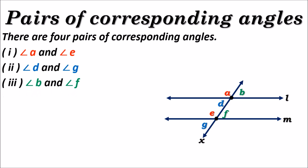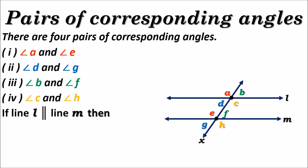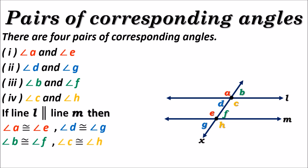Angle C and angle H is the fourth pair of corresponding angles. So in total, we have four pairs of corresponding angles — two pairs on one side of transversal X and two pairs on the other side. If line L and M are parallel, then corresponding angles formed are congruent: angle A ≅ angle E, angle D ≅ angle G, angle B ≅ angle F, and angle C ≅ angle H. All four pairs of corresponding angles are congruent because line L and line M are parallel.